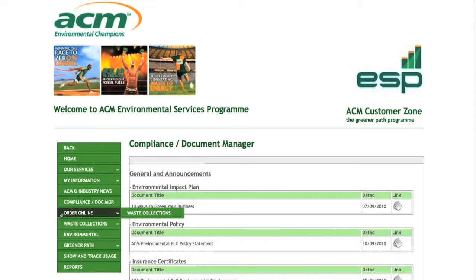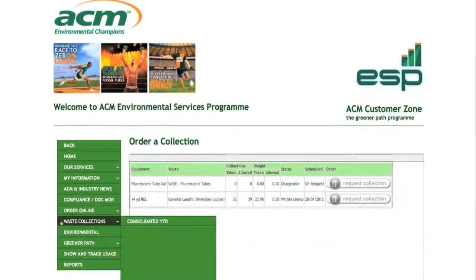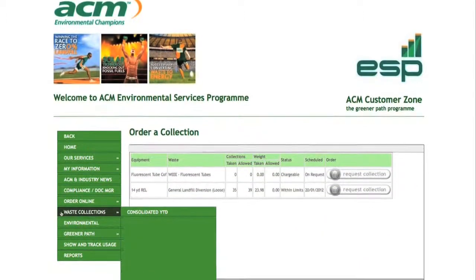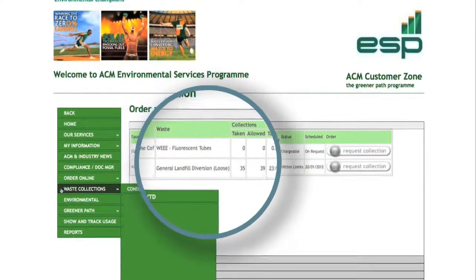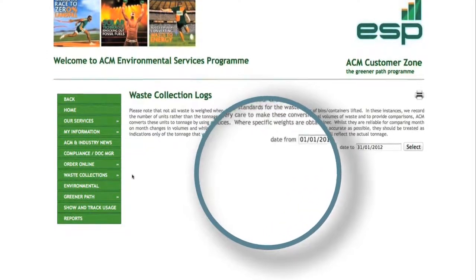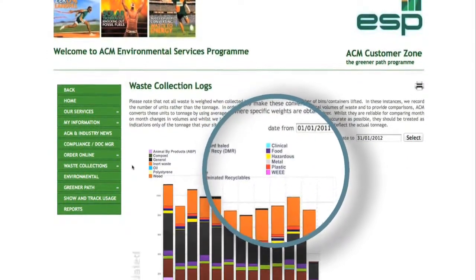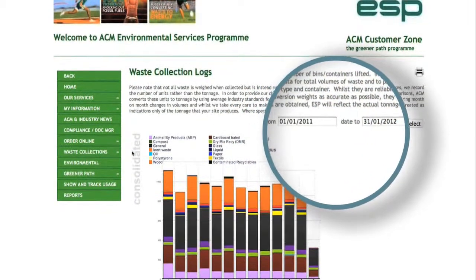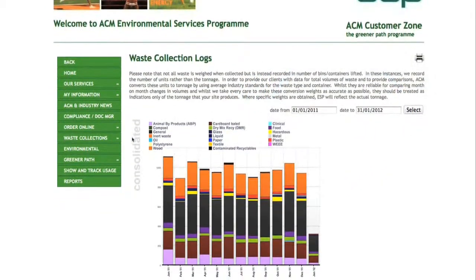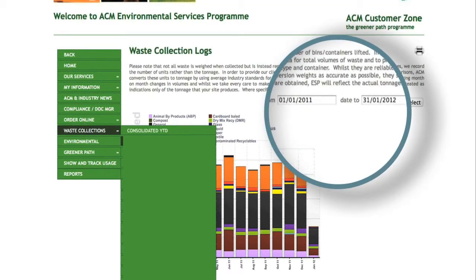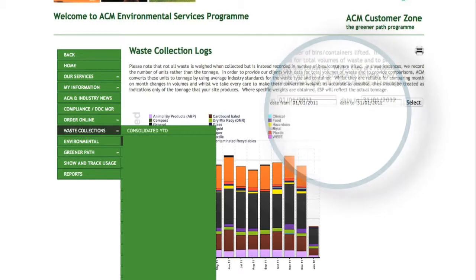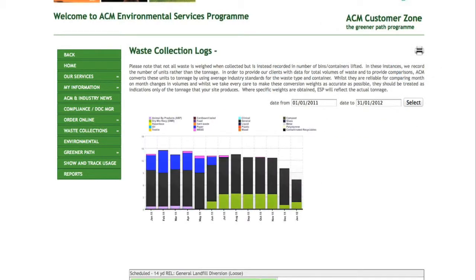Thanks to the waste ordering page, you are able to instruct ACM of all your collection requirements. As a user you can also process your reports on the number and weights of collections, as it breaks down the type of waste illustrated in bar graphs, whilst under each of the headings the dates of when the collections were made and amount collected in tonnage is listed. It's particularly useful for the management of multiple sites, as it allows you to choose between looking at individual sites or the company as a whole, whilst the date range function helps prepare daily, weekly or monthly reports of waste collection.